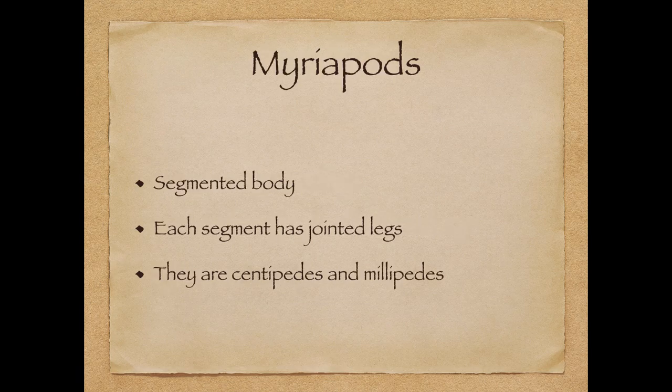Next are myriapods — these are the very long, thin, scary-looking creatures that frighten most people. These are centipedes and millipedes. They have a segmented body, meaning their bodies consist of many segments. Each segment has one pair of jointed legs.